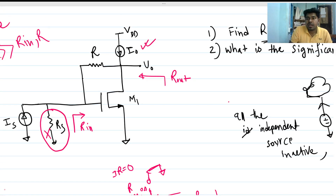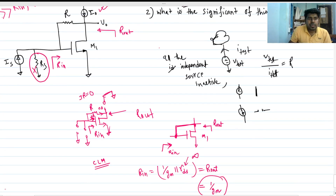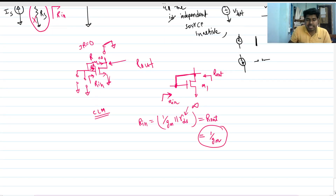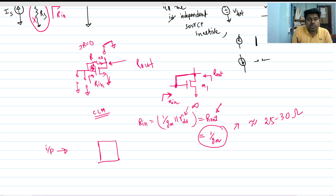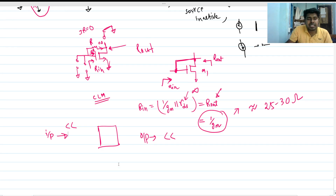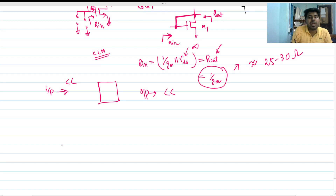Now we comment on the significance of this circuit. The input impedance is 1/gm, which is a very low impedance — around 25 to 30 ohms. If input impedance is very low and output impedance is also very low (since R_in equals R_out), we can comment on what type of amplifier this is.